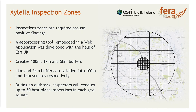If we were to find a Xylella outbreak in the UK, what would happen initially is we'd create an inspection zone around that affected plant. We've created a geoprocessing tool within a web app that allows inspectors to do this. The web tool takes a couple of parameters — easting and northing of that initial finding — and creates a number of buffers around this. The one kilometre and five kilometre buffers are gridded into 100 metre and one kilometre grid squares respectively. Within each of these grid squares, an inspector will be assigned to conduct up to 50 host plant inspections per grid, so there's potentially quite a large amount of inspections that would need to take place.